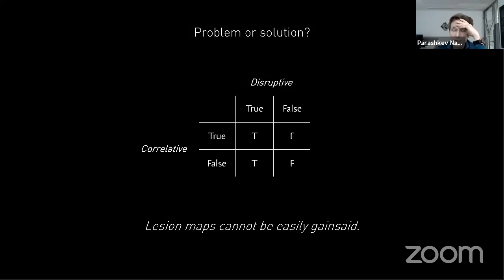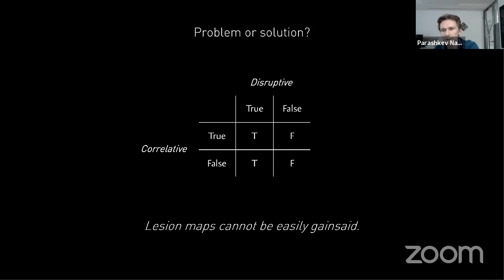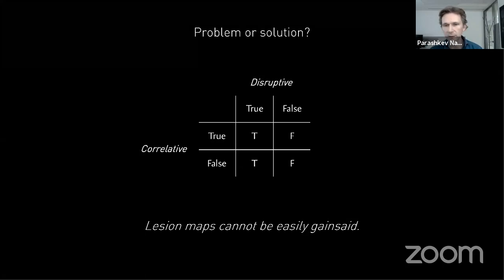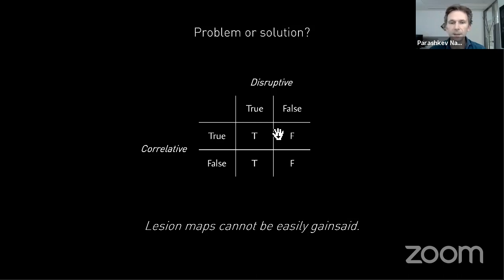Why is lesion deficit mapping so difficult? Actually it's because it is so powerful. One of the main strengths of lesion deficit maps is that they're inferentially much stronger than any kind of correlative technique. If we build a simple truth table comparing a correlative technique such as functional imaging against a disruptive technique such as lesion deficit mapping, clearly a correlated signal might merely be a correlation — it doesn't necessarily indicate that the highlighted substrate is actually necessary for the function. The disruptive method will always trump.